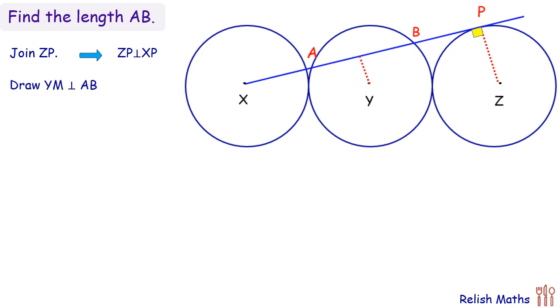The second construction we are doing is drawing YM perpendicular to AB. We know a perpendicular drawn from the center on a chord also bisects the chord, so AM and MB are equal. And the last construction is you will join the centers X, Y, and Z.